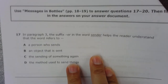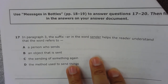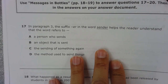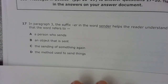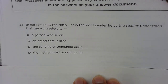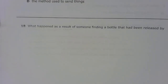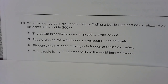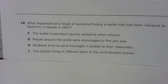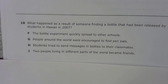Use Messages in Bottles, pages 18-19, to answer questions 17-20. Then fill in the answers on your answer document. Number 17. In paragraph three, the suffix -ER in the word sender helps the reader understand that the word refers to A. A person who sends. B. An object that is sent. C. The sending of something again. D. The method used to send things. Number 18. What happened as a result of someone finding a bottle released by students in Hawaii in 2007? F. The bottle experiment quickly spread to other schools. G. People around the world were encouraged to find pen pals. H. Students tried to send messages in bottles to their classmates. J. Two people living in different parts of the world became friends.